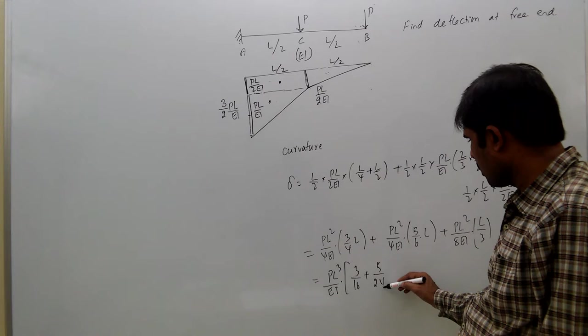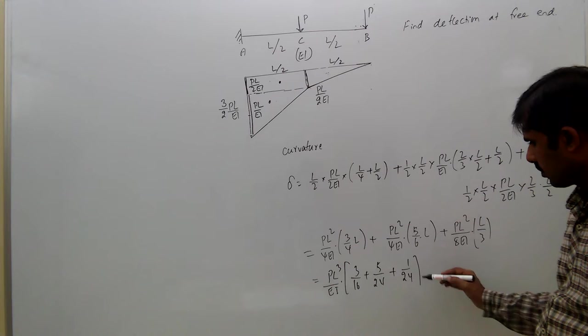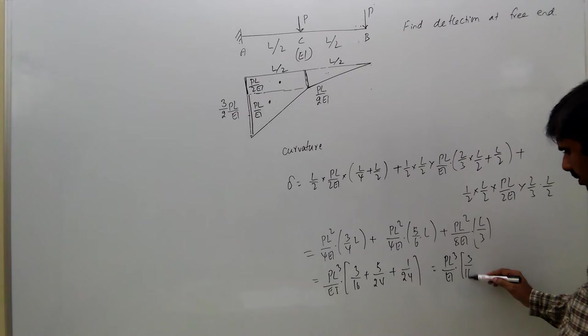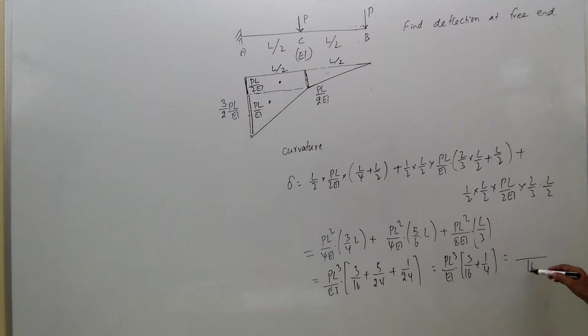Now adding all this, you can take PL³/EI common: here 3/16, here 5/24 plus 1/24. That equals PL³/EI, here 3/16, here 5/24 plus 1/24, 6/24 means 1/4.